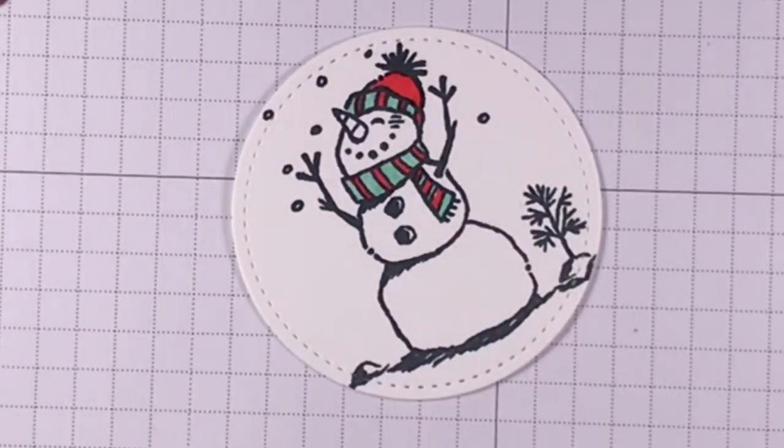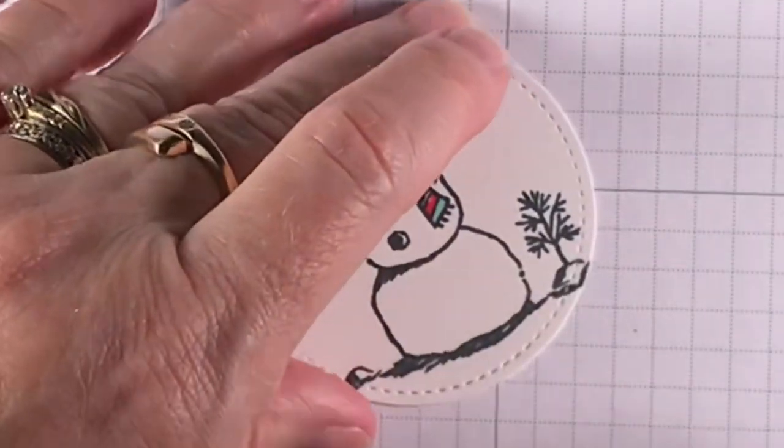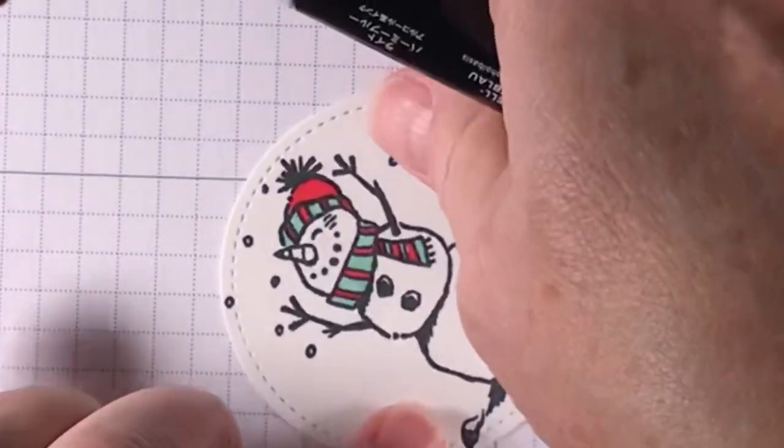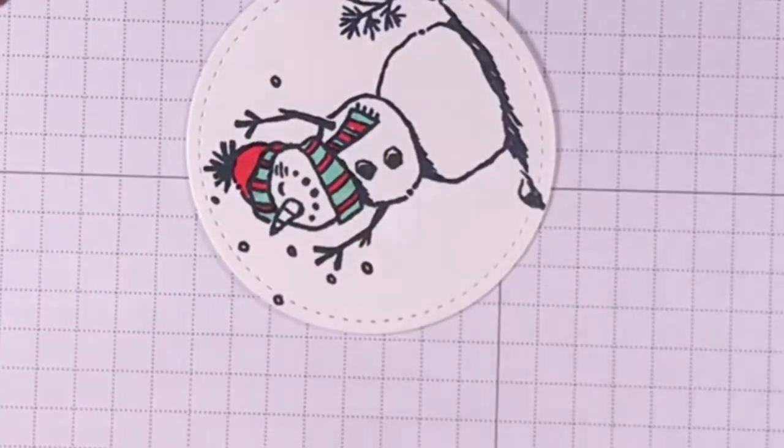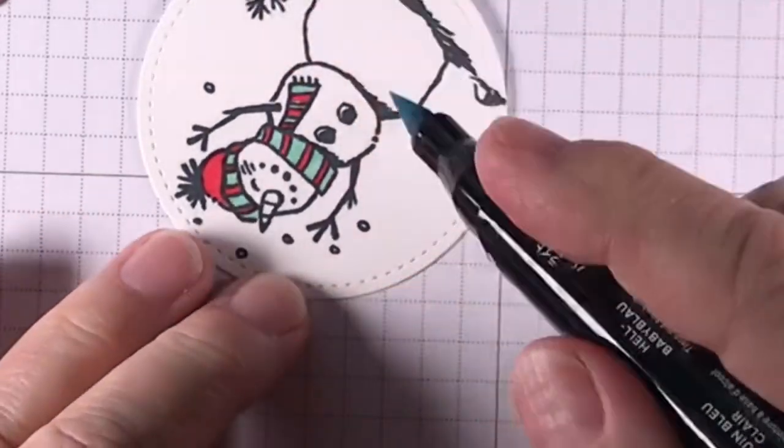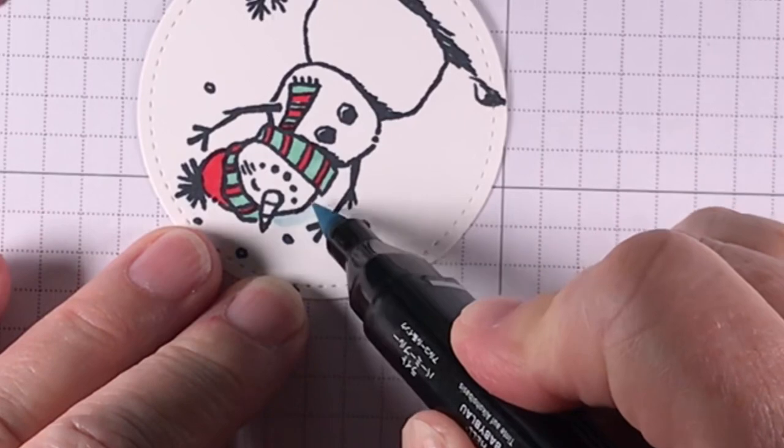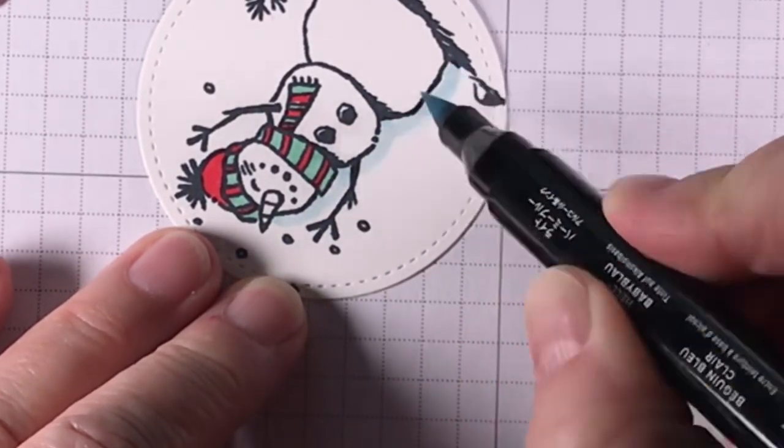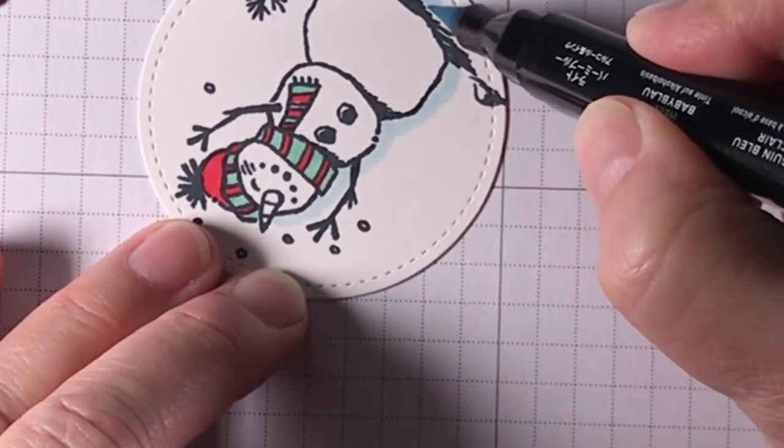Now we could leave it just like that and that would be good, or we can highlight it. And on the other one I highlighted both sides, but I think on this one, just for something a little different, I'm going to just outline this one side of the snowman like this, a little bit of the snow down here.